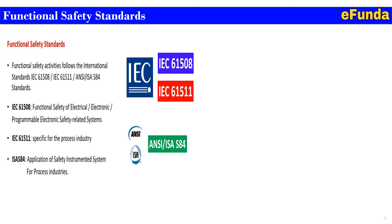Primarily, functional safety activities follow international standards: IEC 61508, IEC 61511, and ISA S84. Mainly, IEC 61508 covers functional safety of electrical, electronic, and programmable electronic safety-related systems. IEC 61511 is specific to the process industry, and ISA S84 is also applicable for the process industry.